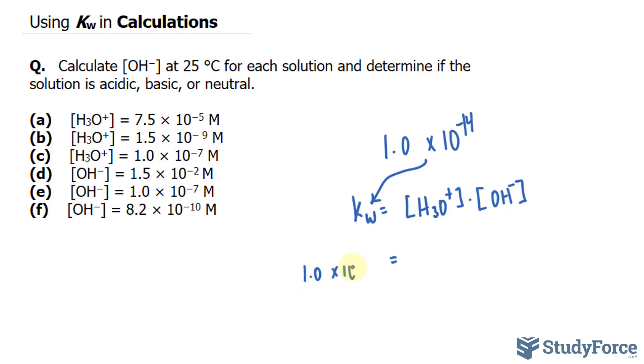1.0 times 10 to the power of negative 14 is equal to 7.5 times 10 to the power of negative 5, and that's being multiplied to the concentration of OH ions, hydroxide.